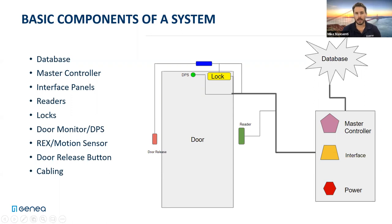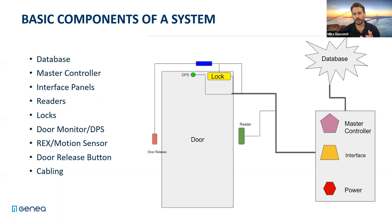I break it down to three main sets of components. You've got the door-side component, you've got the head end component, and then you've got the software/database level. Starting at the door - that's the thing that everyone knows. You have your reader. You've got the lock on the door, which can come in usually one of two flavors: a mag lock that is constantly powered and holding the door shut, and a door strike that requires power to release and then the door will open. You've also got a door release button - whenever you have a mag lock you need a physical override so that in case of emergency you can hit a button and go out the door without requiring any power or software.